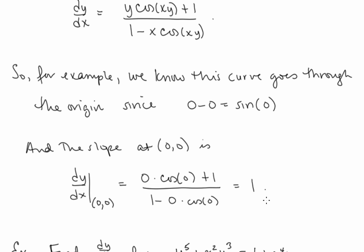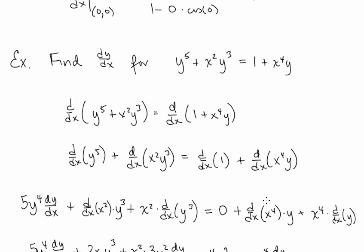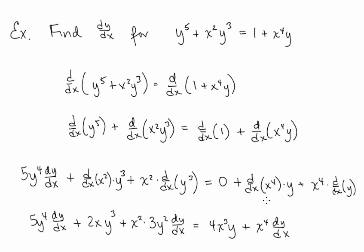That's how we use implicit differentiation to find the slope of a curve when the equation cannot explicitly be solved for y. Let's look at another example: find dy/dx for y⁵ + x²y³ = 1 + x⁴y. We take the derivative of both sides with respect to x: derivative of y⁵ plus derivative of x²y³ on the left, and derivative of 1 plus derivative of x⁴y on the right.